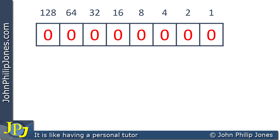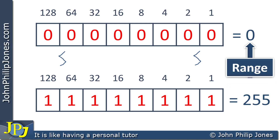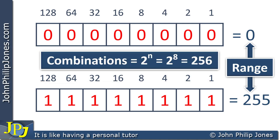Let's now consider a byte. For this byte, every position is a zero, and we know the value in our number system is indeed zero. We can carry on and look at all the other possible combinations, all the way up to when every position is a 1. When every position in a byte is a 1, we know we're going to get 255. The range for a byte goes from 0 to 255. Using our formula, 2 to the n equals 2 to the 8, because there are 8 bits in a byte, and that gives us 256. The maximum value of 255 is 1 less than the 256 combinations.